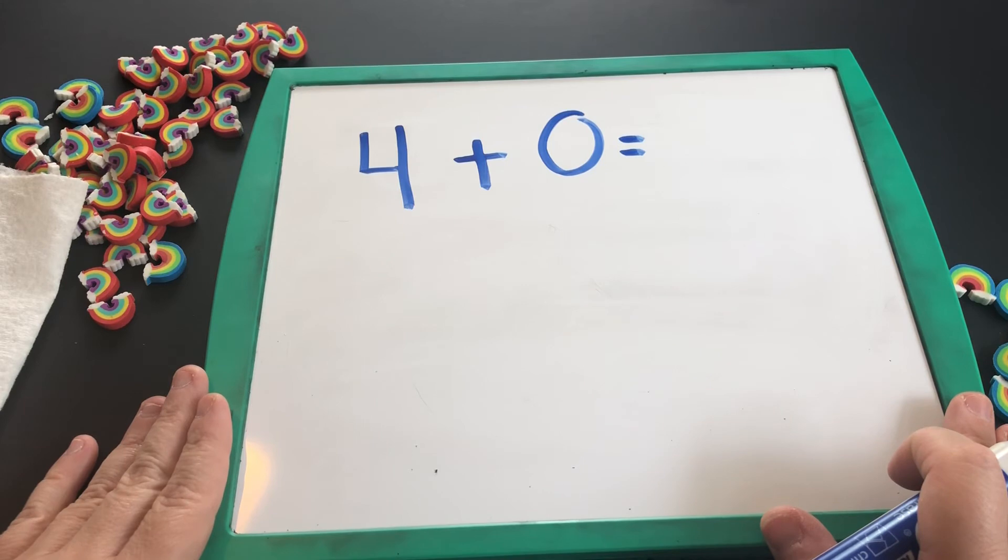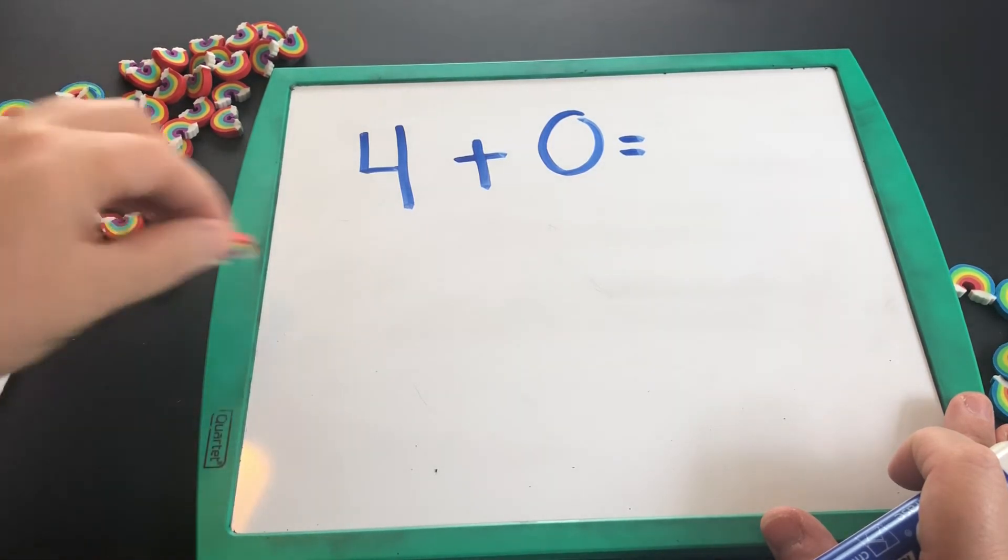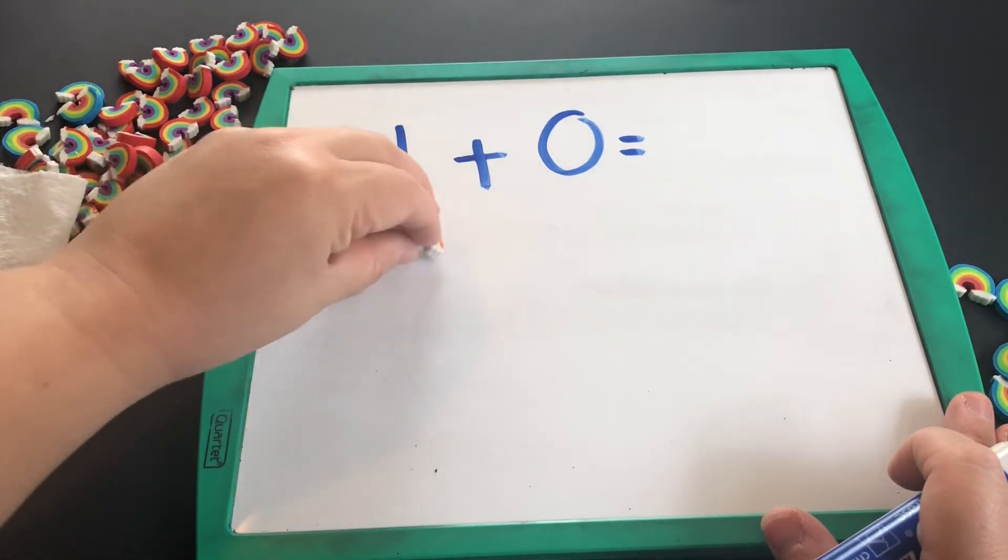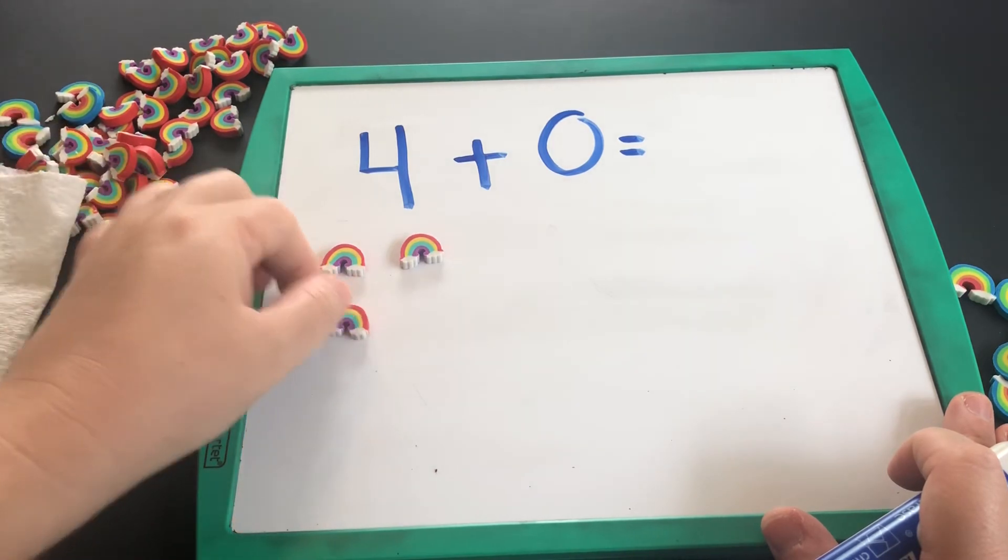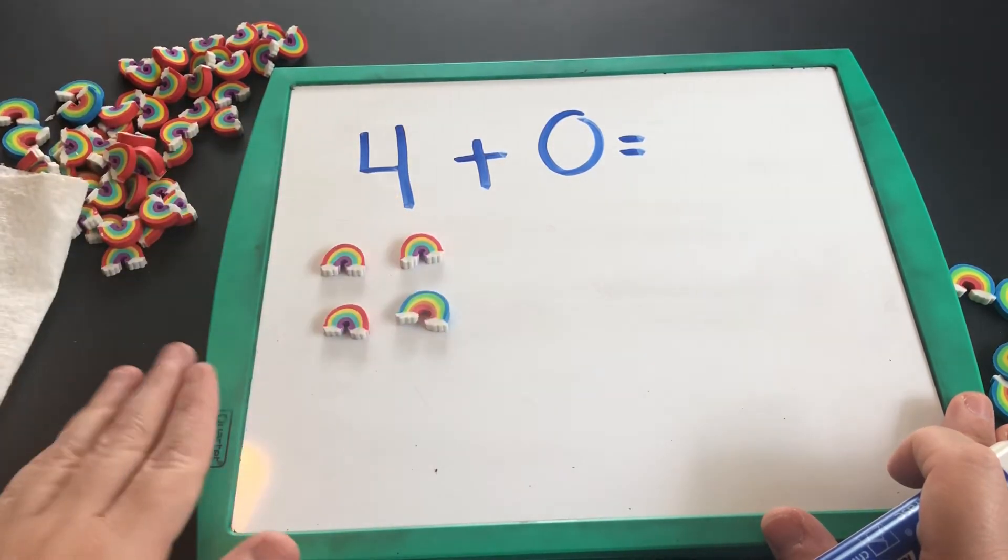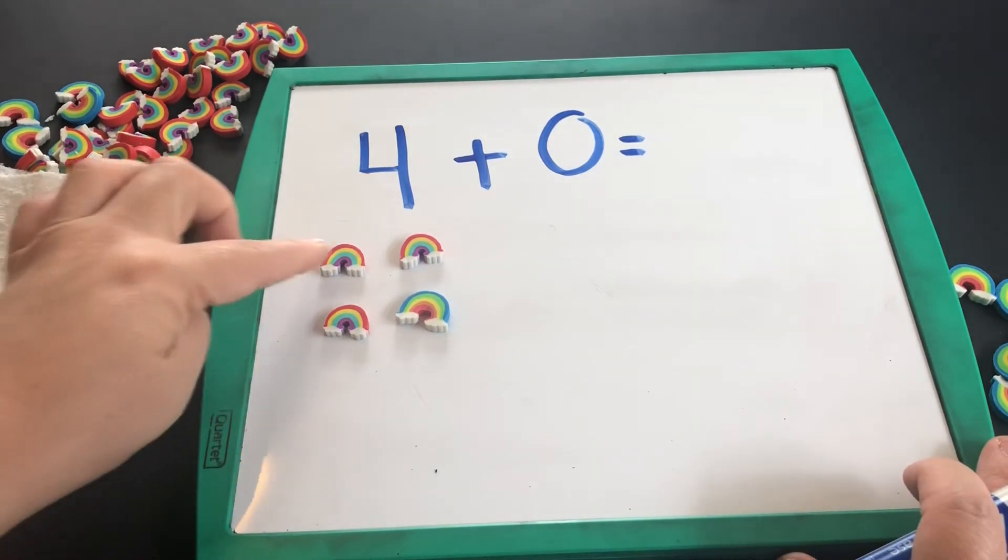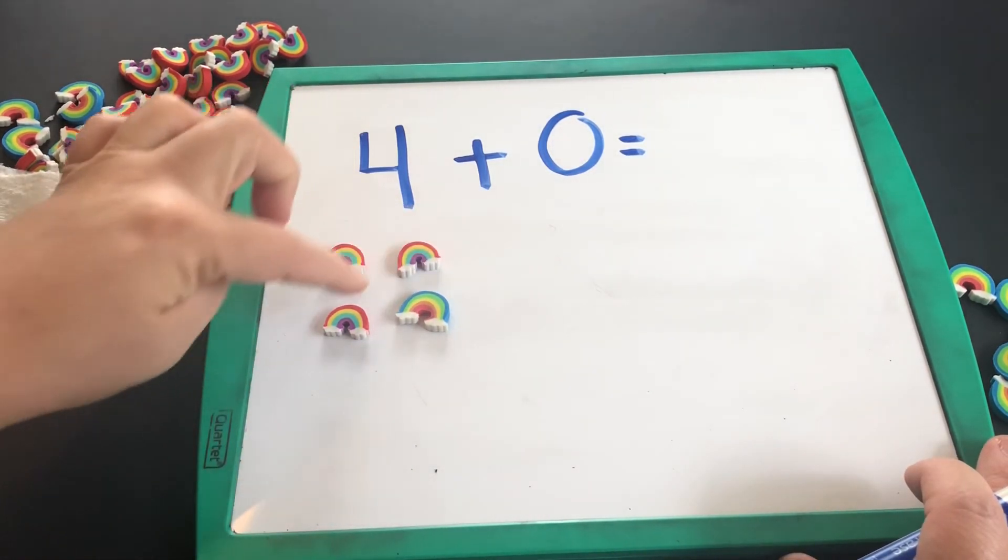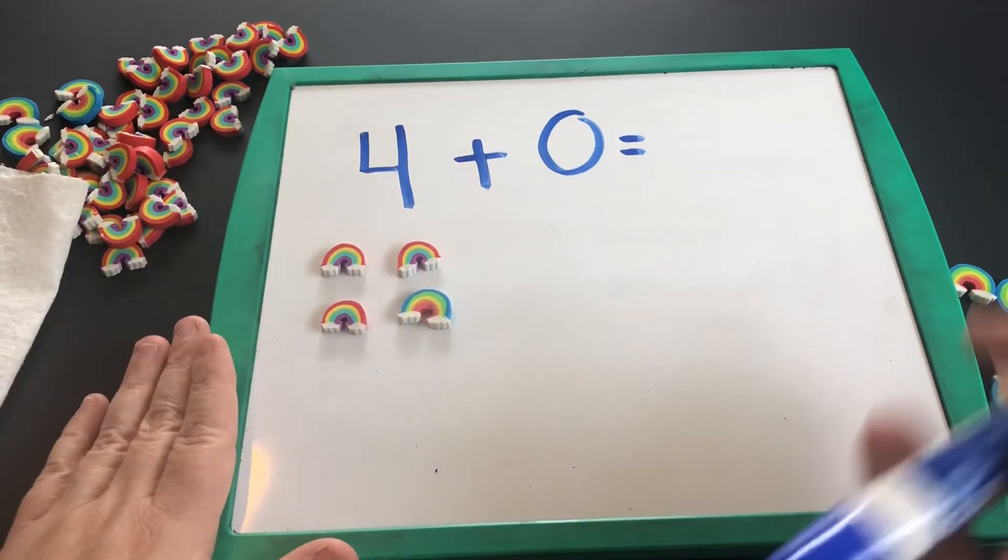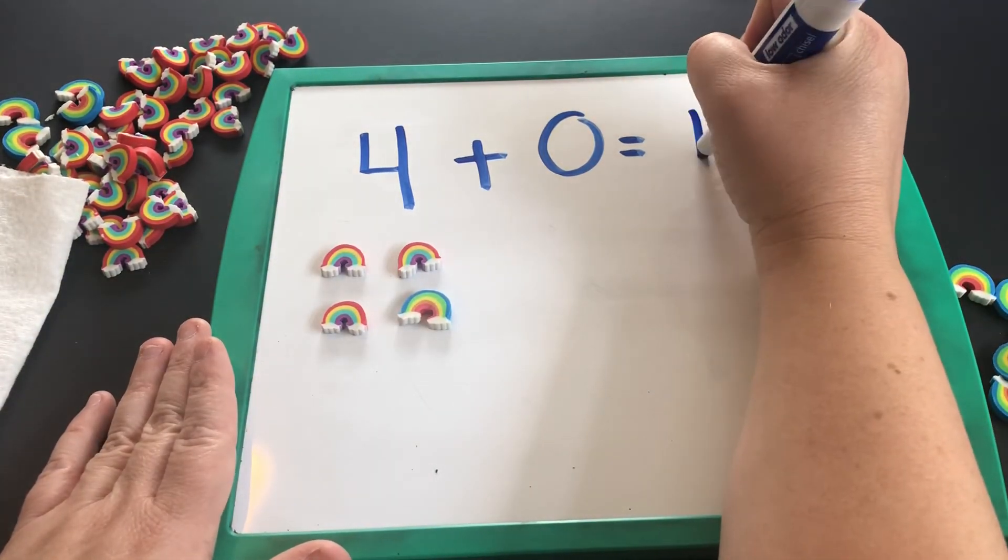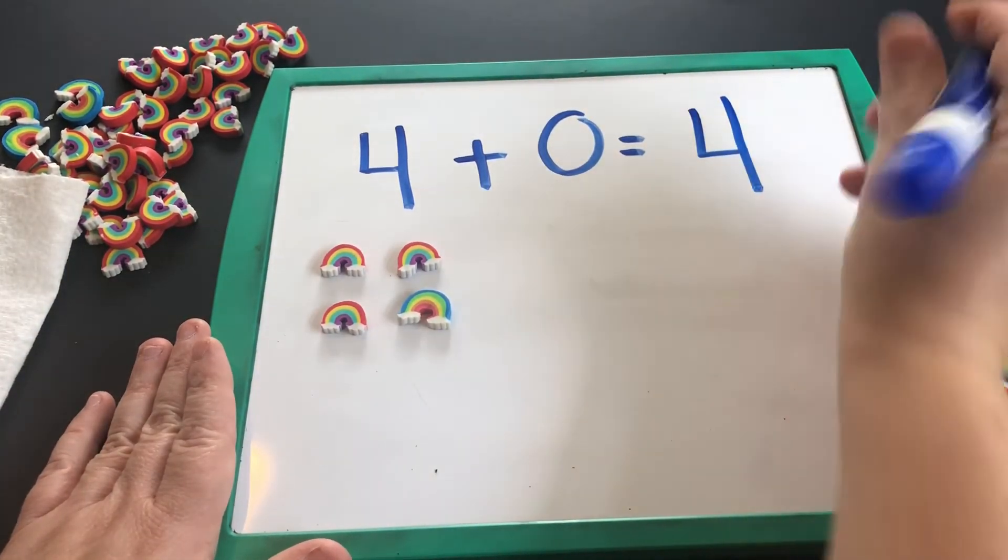Zero is nothing at all. So we are going to start with our four rainbows—one, two, three, four—and if we are adding zero, nothing, then we will still have one, two, three, four rainbows. So four plus zero equals four.